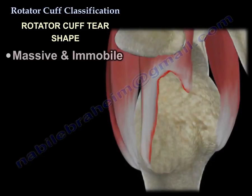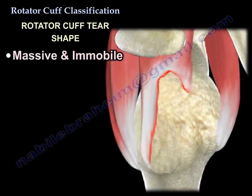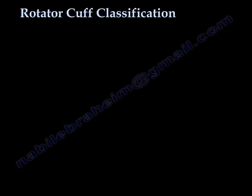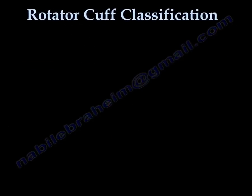The last type is a massive and immobile tear. It may be longitudinal or U-shaped. This massive contracted tear is difficult to repair and often requires an interval slide. Thank you for listening — I hope that was helpful.